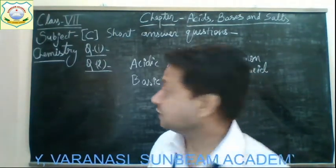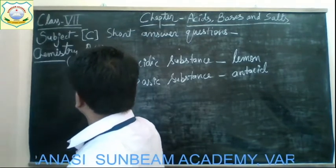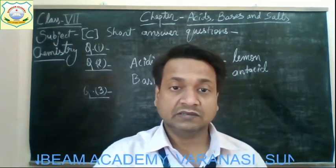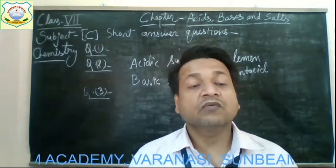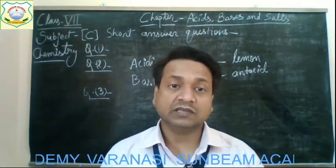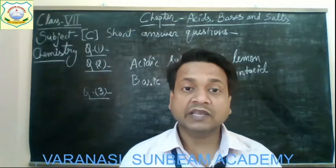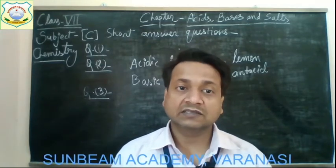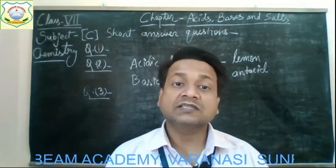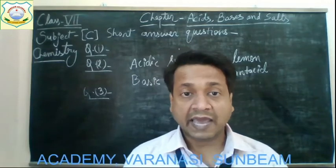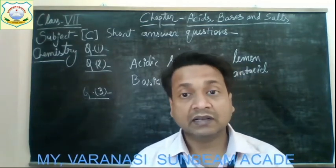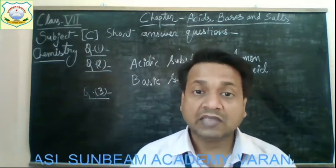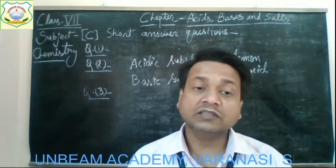Question number three: What happens when dilute sulfuric acid is added to zinc? When dilute sulfuric acid is added to zinc, hydrogen gas is produced along with zinc sulfate. Zinc is a metal, and when an acid reacts with a metal, hydrogen gas is formed.